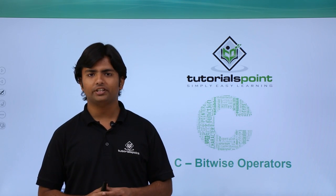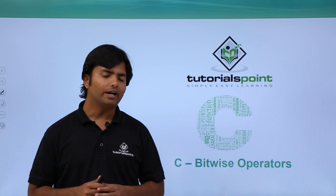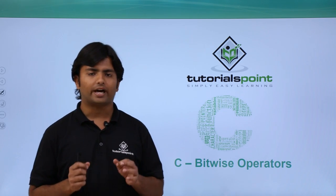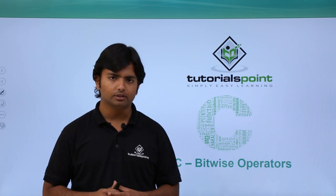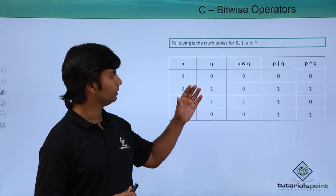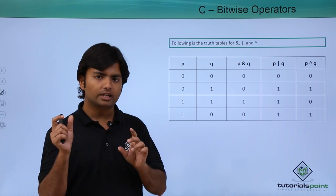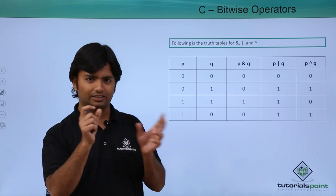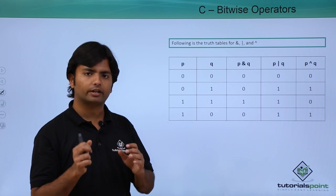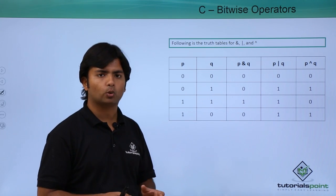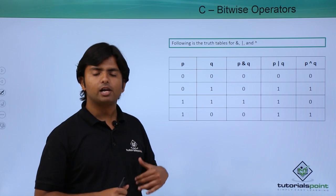In this video we will cover bitwise operators. Bitwise operators are the ones that directly work on the bits of any particular value. For example, if we have a variable like int a equal to 12 or 13, by the time you store that value in a variable, it will firstly be converted into binary and then stored into memory.